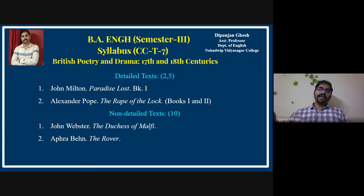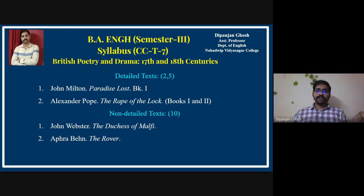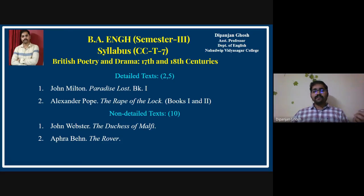There is a particular link with British literature. In your previous semesters — Semester 1 and Semester 2 — you were introduced to literary texts from British literature. In CC-T7, the continuation of that British literature is present. The paper is called British Poetry and Drama: 17th and 18th Century, and there are four major texts — detailed and non-detailed.